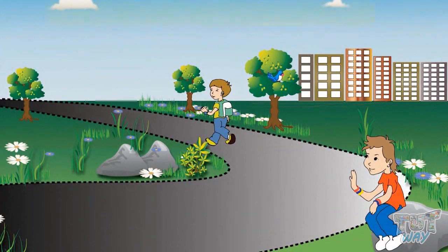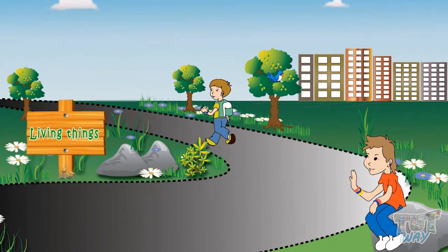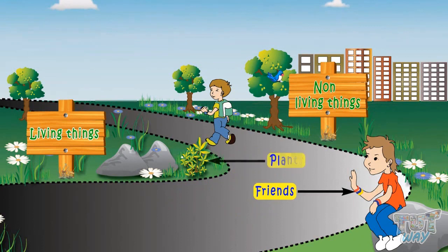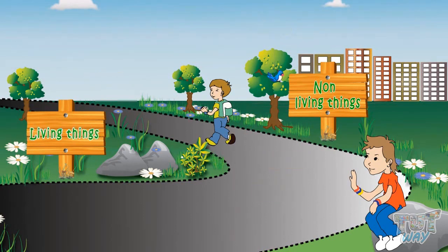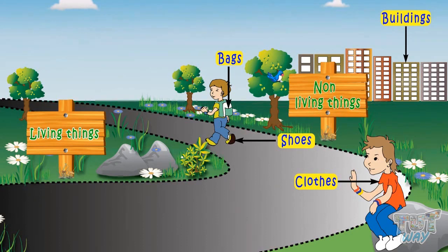Kids, a lot of things around us make our surroundings. Some of them are living and some of them are non-living. Like you, your friends, these plants, these trees, these birds are examples of living things. And your bags, your clothes, shoes, these buildings are examples of non-living things. Let's learn more about it.